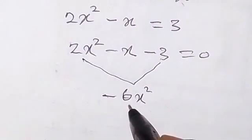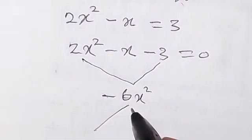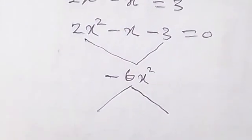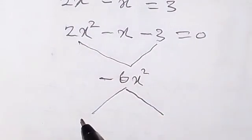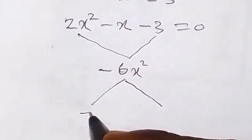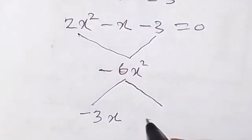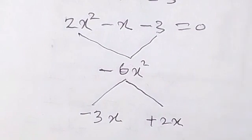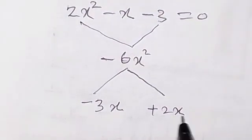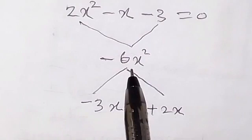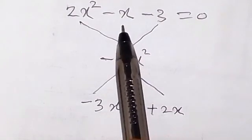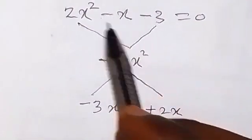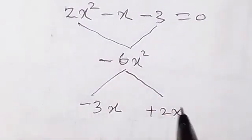Now let's break it down into two factors. Break minus 6x² down into two factors such that we are going to have minus x at the center. So that will give us minus 3x plus 2x, because when we multiply minus 3x times 2x that will give us minus 6x². And when we add it together that will give us minus x. So here now we can replace minus x at the center with these two numbers.